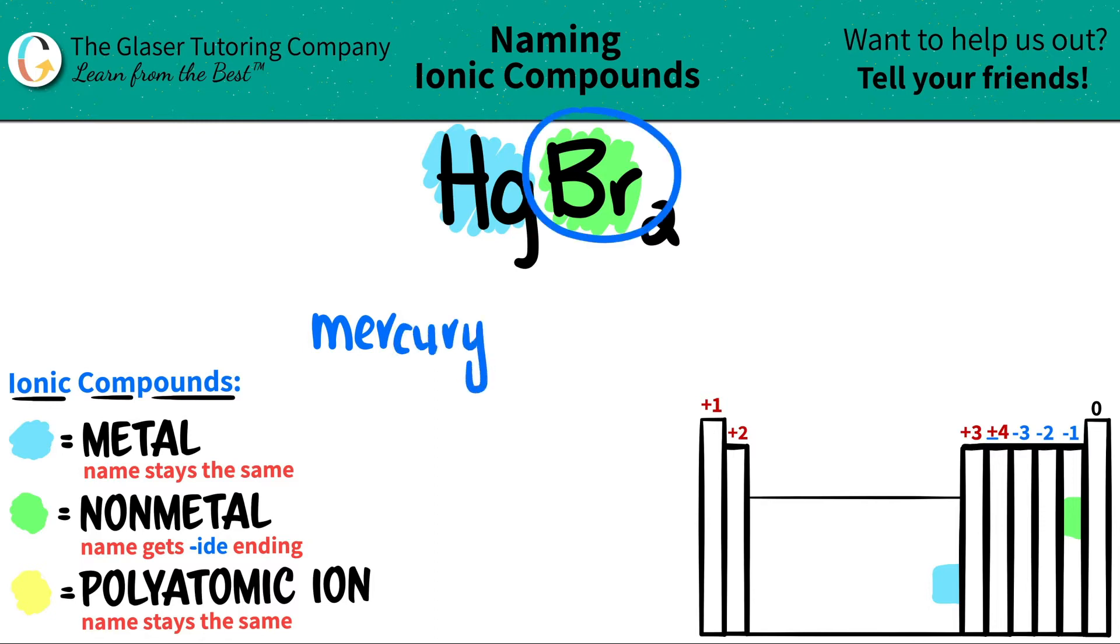And the bromine, that's the nonmetal. That gets the -ide ending. So it's not going to be bromine anymore. It's going to be bromide. You drop the NE and you add the DE for bromide.